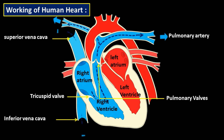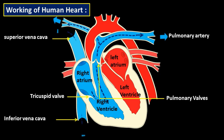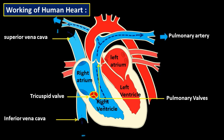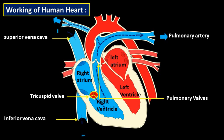Inside the lungs, carbon dioxide is removed from the blood and oxygen is mixed in. This process is known as the oxygenation process, which takes place inside the lungs — oxygen mixes into the blood and carbon dioxide is removed.